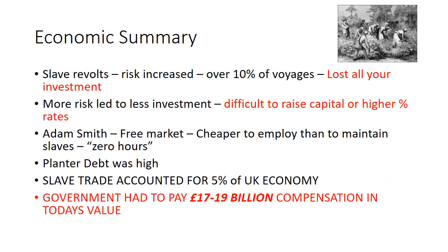To summarise, the reason people argue economic reasons abolished slavery: increasing risk from slave revolts and bad weather meant if you lost your investment you wouldn't reinvest. Increasing risk led to less investment and higher interest rates from banks. Adam Smith's ideas of the free market meant it became cheaper to employ workers than to maintain slaves. Planters got increasingly into debt. However, if the government was going to get rid of slavery, it would have to pay about £17–20 billion compensation in today's value. So there are pros and cons of this argument. If you can print those two slides, that'd be great.